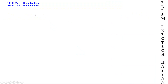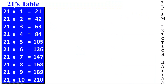First one is 21's table. 21, 1 times 21. 21, 2 times 42. 21, 3 times 63. 21, 4 times 84. 21, 5 times 105.